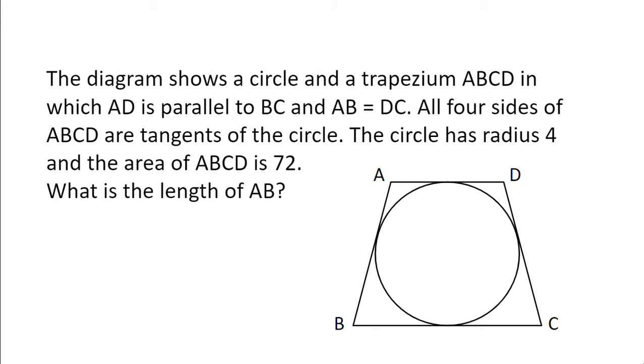The diagram shows a circle and a trapezium ABCD in which AD is parallel to BC and AB equals DC. All four sides of ABCD are tangents of the circle. The circle has radius 4 and the area of ABCD is 72. What is the length of AB?